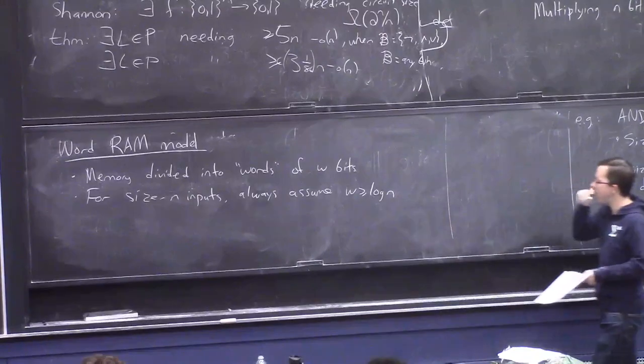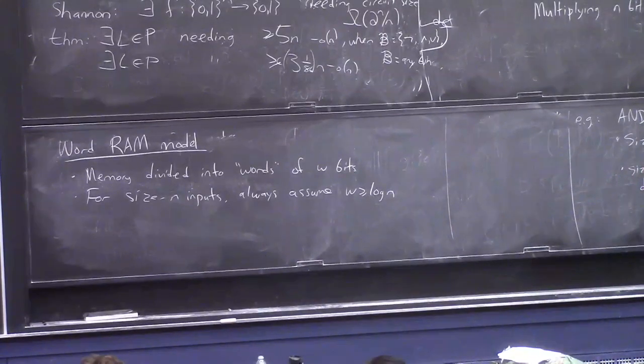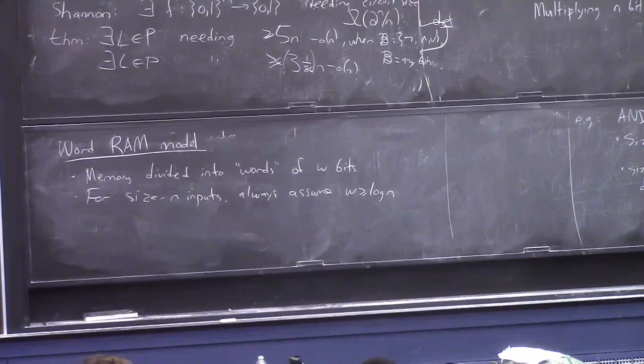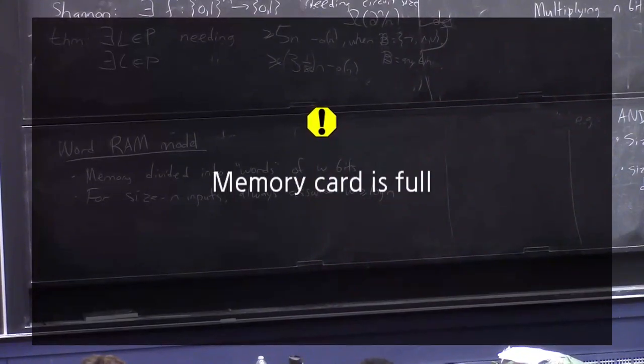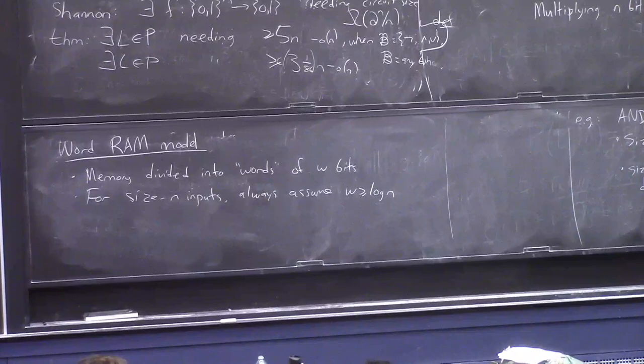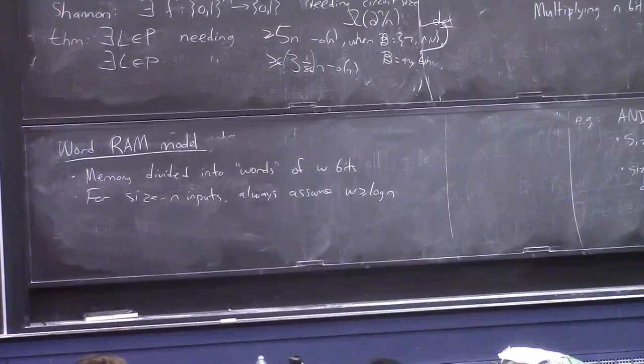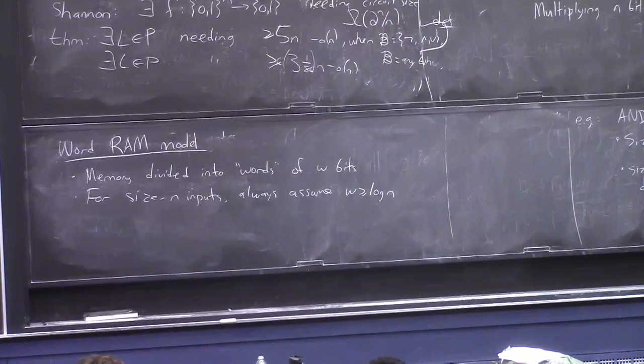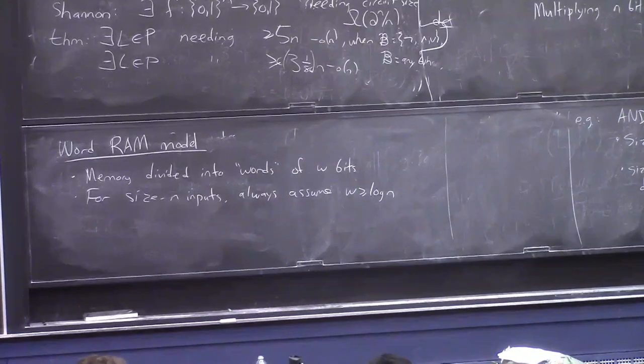But I claim that it's actually not weird because first of all, you do it when you study space complexity. And the main reason you assume it is that when you actually want to model normal computation, like our palindrome's algorithm, like for i equals 1 to n, check if x i is the same as x n minus i plus 1, you want to assume that i is just like an int data type in C. It's just like one number and it should somehow cost you like space 1, like it should be an integer.